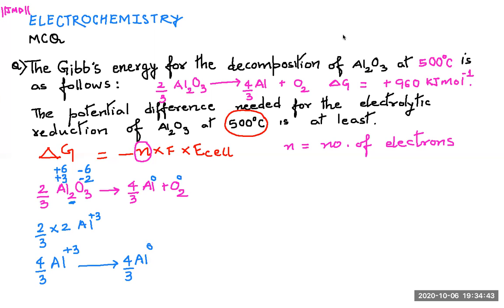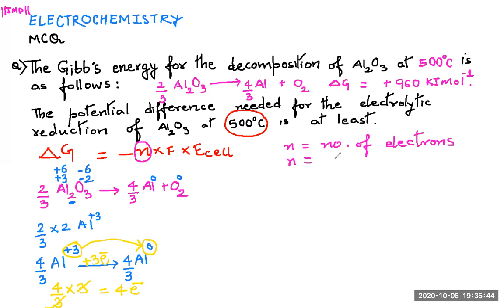The number of electrons involved: to reduce the +3 charge to zero, I need 3 mole of electrons. But I'm not using the entire 3 moles — I'm using 4/3 of it, so: 4/3 × 3 = 4 electrons. The 3s cancel, giving n = 4 electrons.